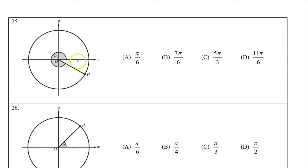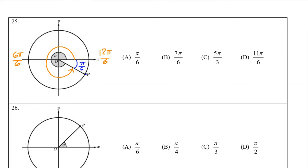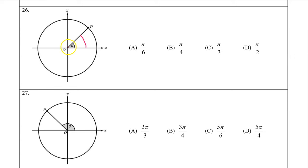In number 25, it appears that this small angle right here is one sixth of a semicircle, so it has a size of pi over 6. That means angle theta, which goes all the way around and back, is some multiple of pi over 6. If we think of pi as 6pi over 6 and 2pi as 12pi over 6, then we realize that P is at one multiple before 12pi over 6 — it's at 11pi over 6, and the answer is D. Number 26: when the terminal ray falls right in the middle of the quadrant, you know it's a multiple of pi over 4. Since in this case we're in the first quadrant, the answer is simply pi over 4.